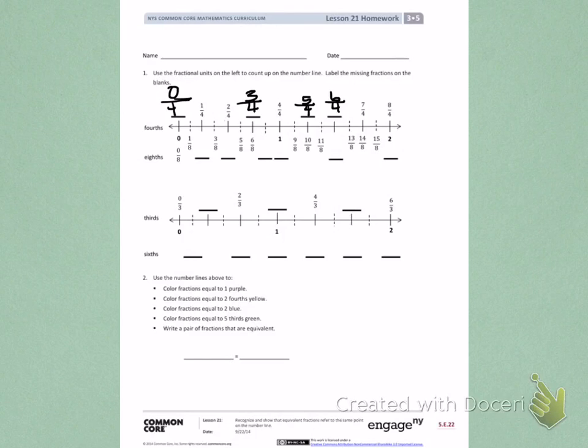On the bottom, I have eighths. I see I have 0 eighths, 1 eighth, 2 eighths, 3 eighths, 4 eighths, 5 eighths, 6 eighths, 7 eighths, 8 eighths,